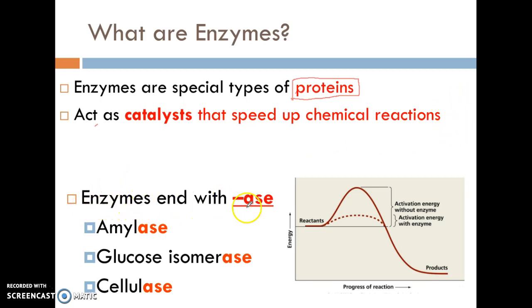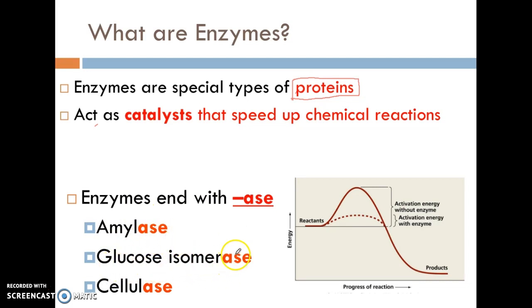Normally, enzymes will end in the letters A-S-E. So anything that ends in -ase, we are going to say that it is talking about an enzyme. For example, the word amylase will be an enzyme. Glucose isomerase is another enzyme. Cellulase is another example of an enzyme as well. Make sure that you take some notes about that specific biomolecule.